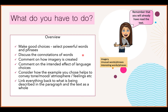You need to comment on how imagery is created — what kind of image is created by the words and language used. You must comment on the intended effect of the language choices: what is the writer trying to get across? You need to consider how the example you chose helps to convey a tone, mood, atmosphere, or feelings — anything to do with what's happening.